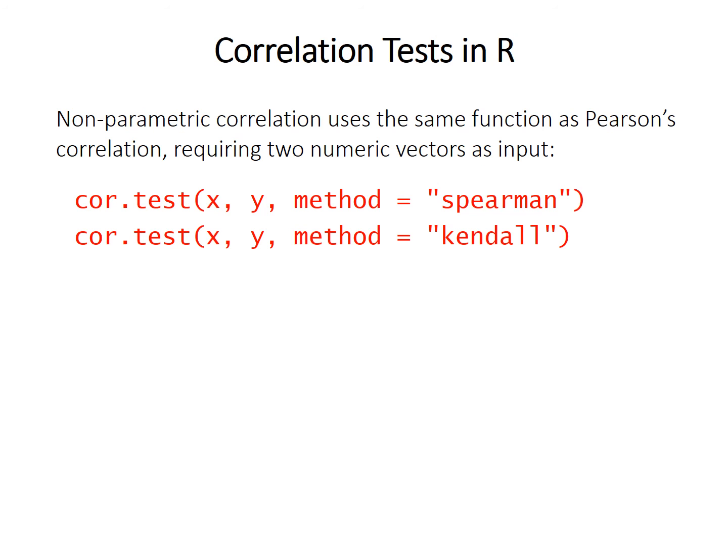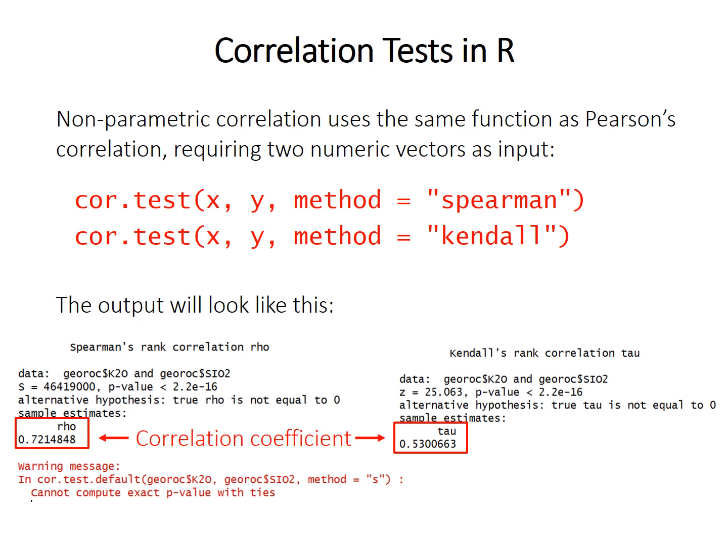The two nonparametric correlation tests in R use the same function as Pearson's correlation: cor.test. They still require two numeric vectors as input — the variable on the x-axis and the variable on the y-axis, with order not mattering. You must specify method equals 'Spearman' or method equals 'Kendall' in quotations, though these can be abbreviated as 's' or 'k'. The output looks very similar to Pearson's output, with the correlation coefficient rho or tau reported at the bottom.